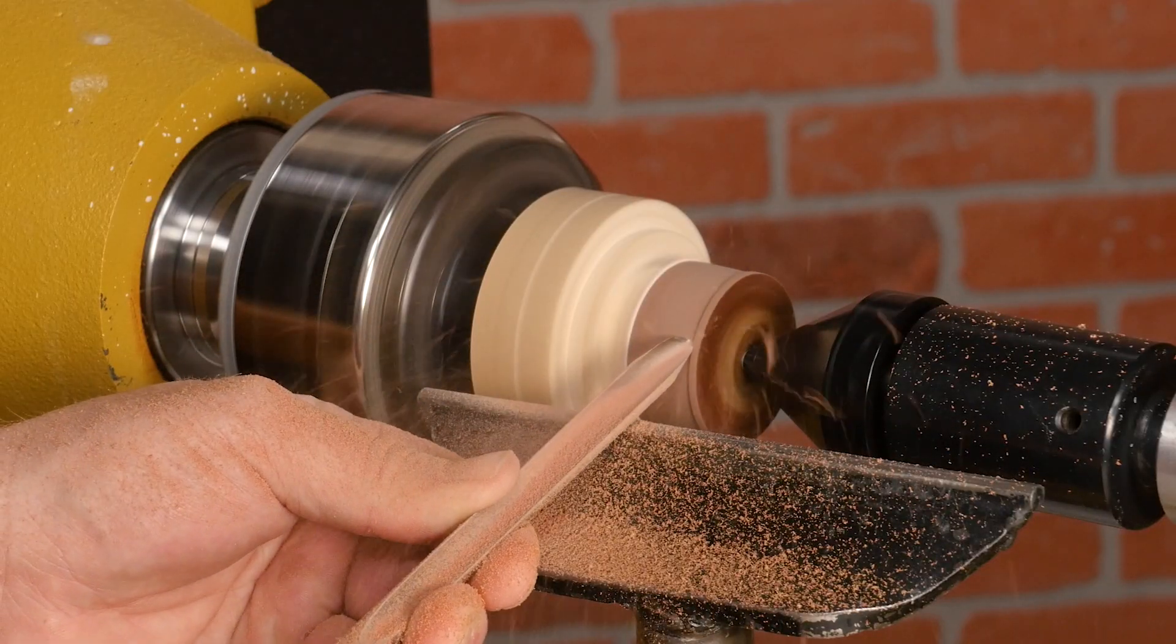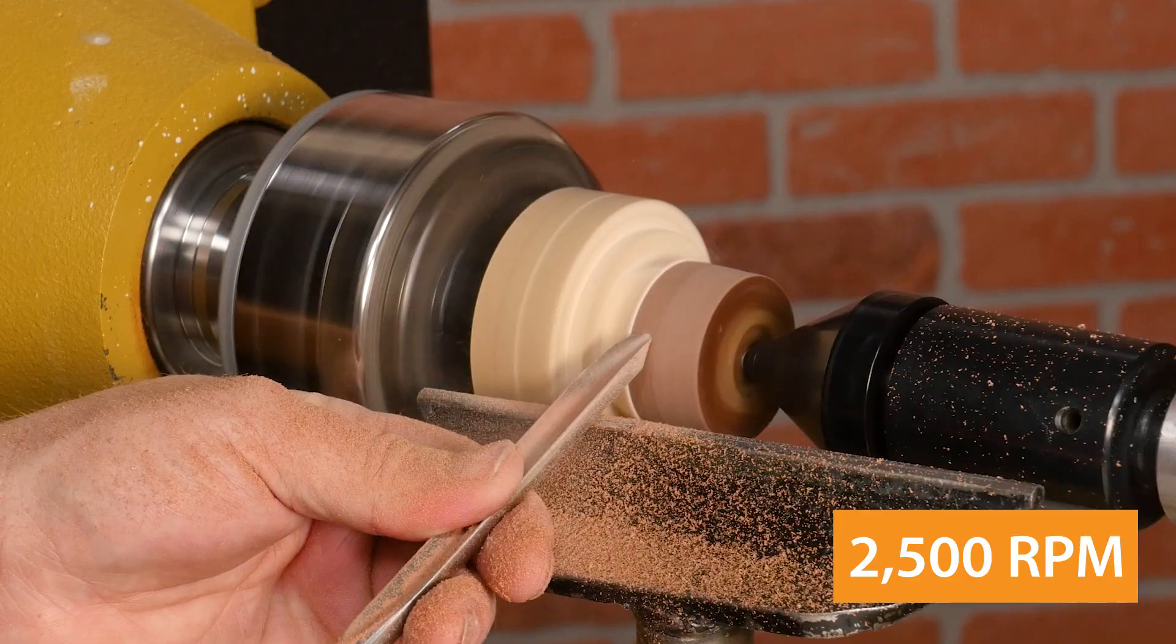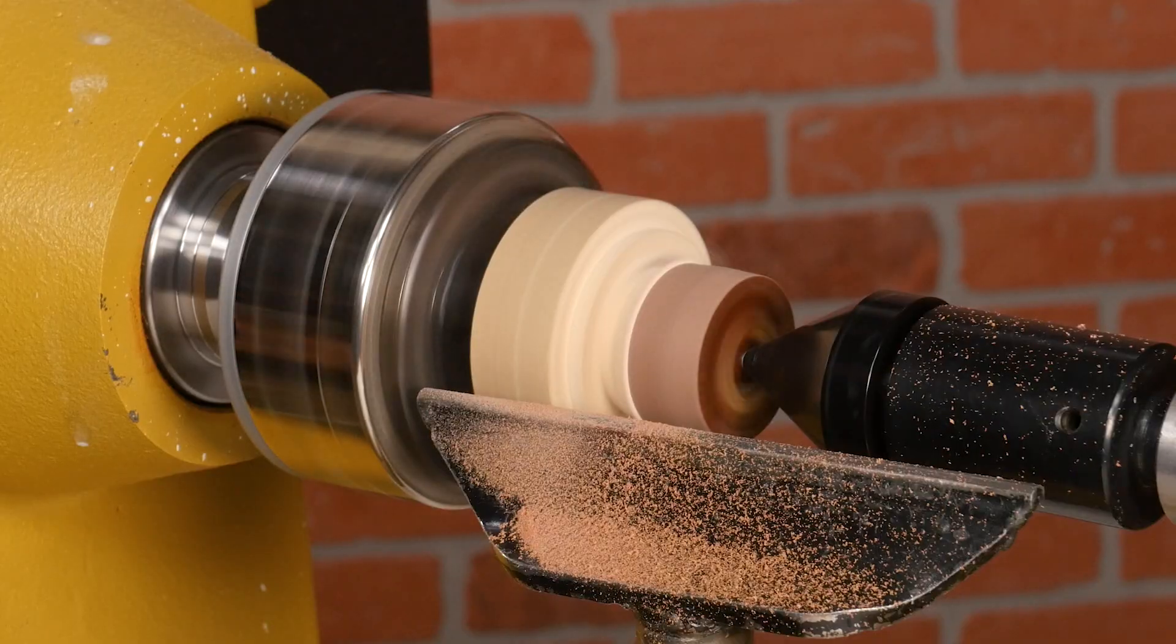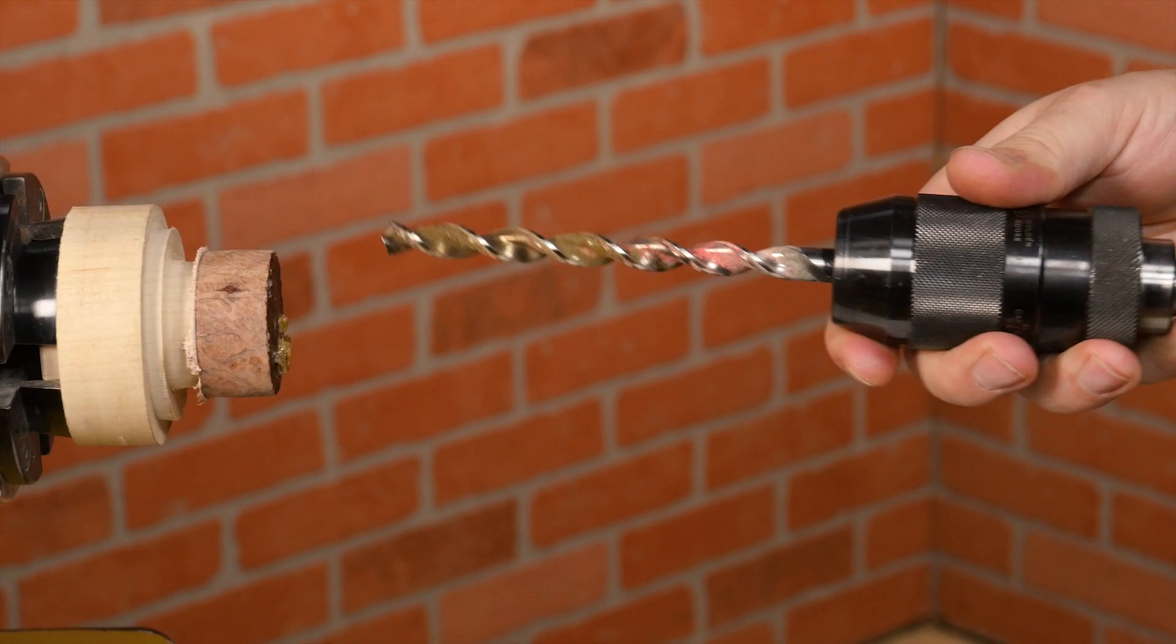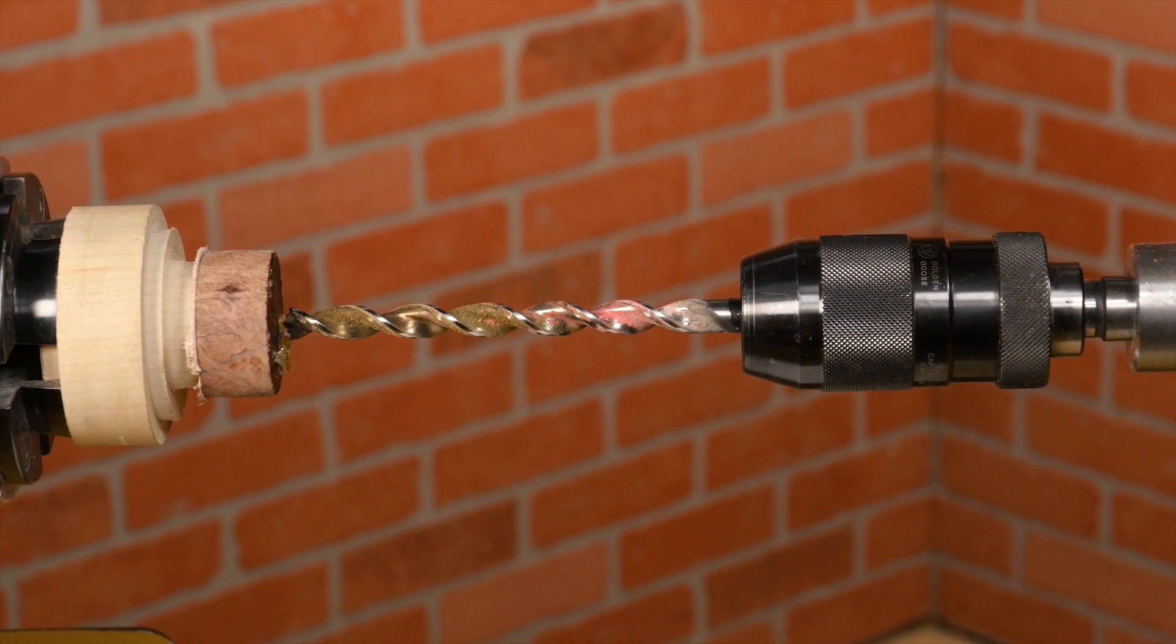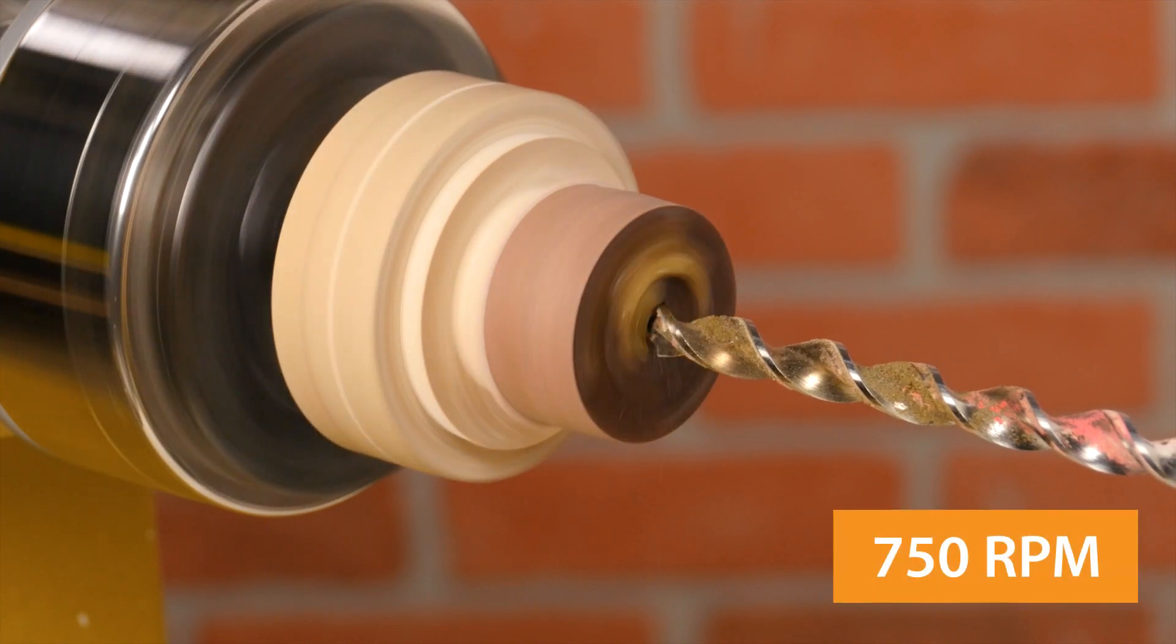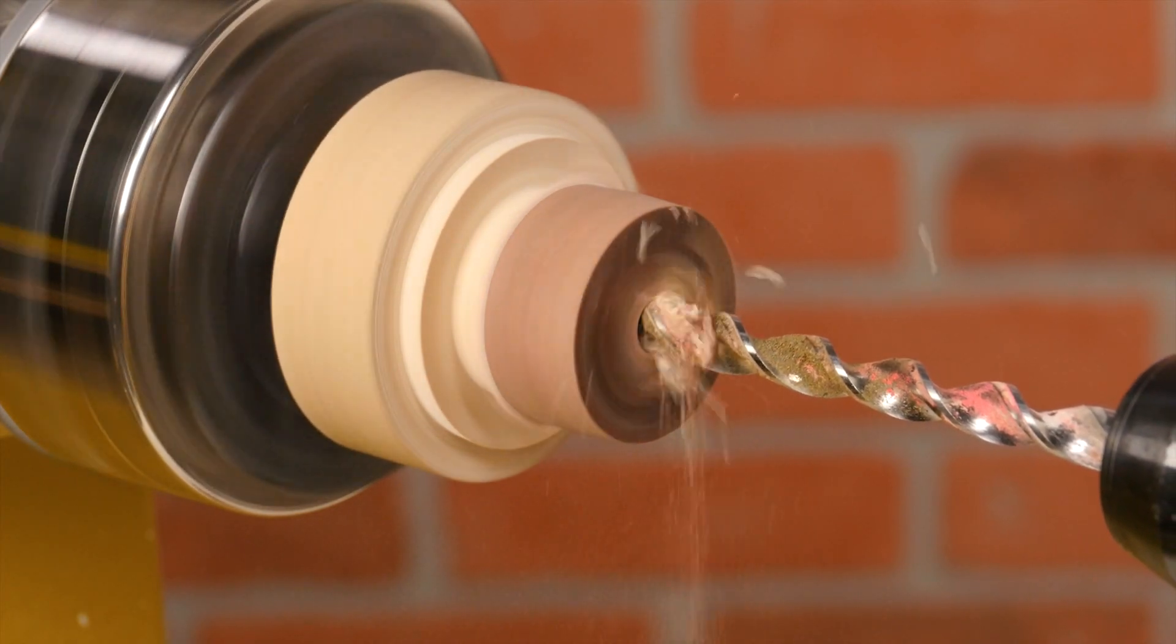Then rough turn the blank to round with the tailstock in place. I'll do this with a spindle gouge and the lathe running around 2500 RPM. Don't turn it down too far, just get it evenly round. Once the blank is round, select a drill that is approximately half the diameter of your ring core. Mount it in a drill chuck in the tailstock. Turn the lathe on to around 750 RPM and drill a pilot hole completely through the ring blank. You'll know you're through when the shavings turn to the color of your waste block.